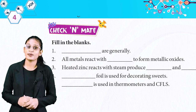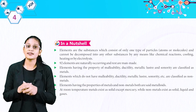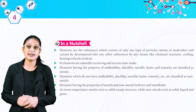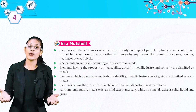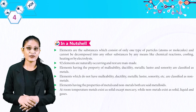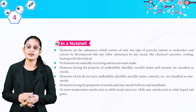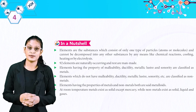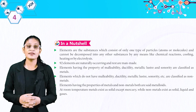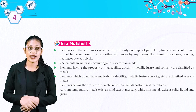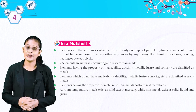What we learned in this chapter in a nutshell: elements are substances which consist of only one type of particles — atoms or molecules — and cannot be decomposed into any other substances by any means. 92 elements are naturally occurring and the rest are manmade. Elements having the properties of malleability, ductility, metallic lustre, sonority, etc. are classified as metals; elements without these properties are classified as non-metals. Elements having properties of both metals and non-metals are called metalloids. At room temperature, metals exist as solids except mercury, while non-metals exist as solids, liquids and gases.